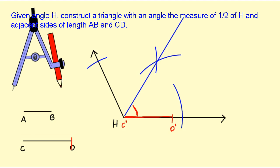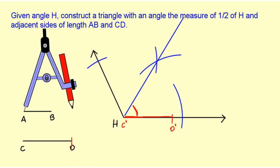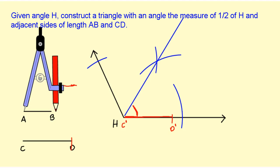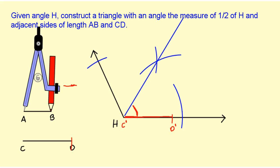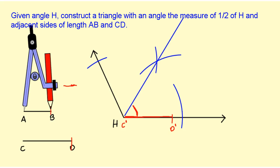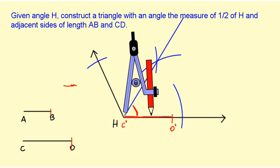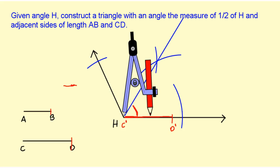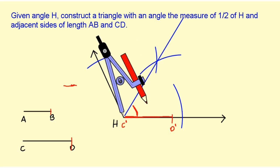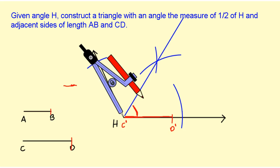Now I'm going to take my compass and do the same thing — copy AB, lock that in, mark it off, pick it up. I'm going to put it on H again, because that's one of the vertices of my actual triangle.